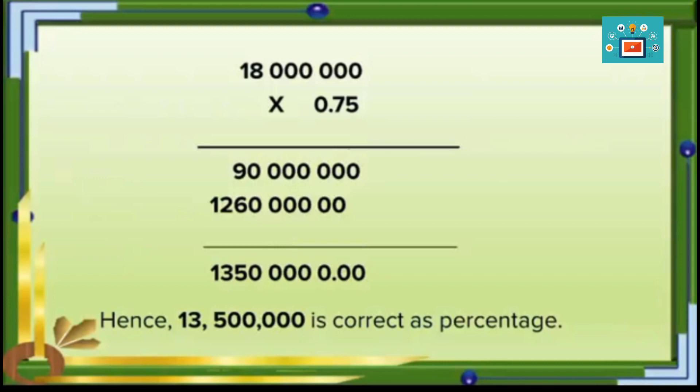Adding the partial products and accounting for two decimal places, the answer is 13 million 500 thousand — which is the correct percentage as shown in the problem.